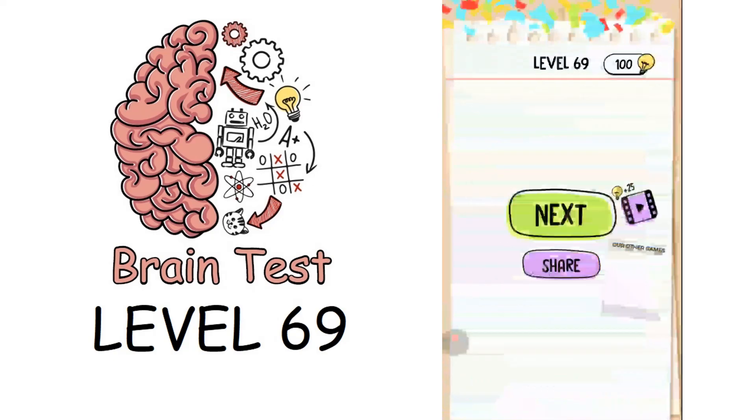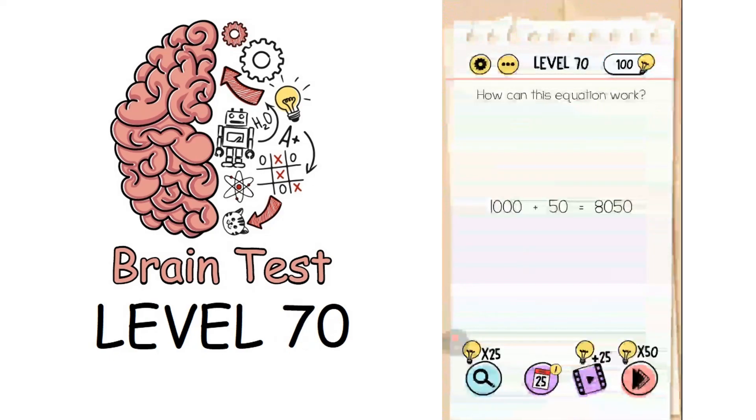Now we're on to level 70: how can this equation work? There's an equation given, 1000 plus 50 equals 8050. How can we solve this? Move the 70, which is level 70, and put it here. That solves the puzzle.